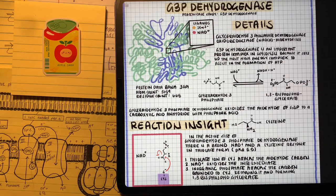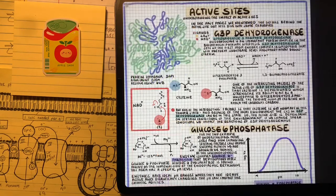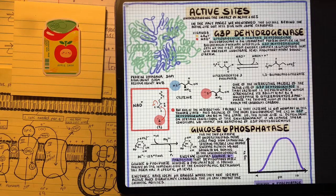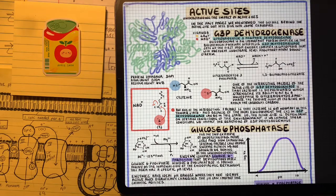G3P dehydrogenase is one of my favorite enzymes to look at to see the importance of amino acid residues at the active site of the protein complex. In later videos, we're going to dive a little bit more into the importance of those amino acid residues, such as cysteine.